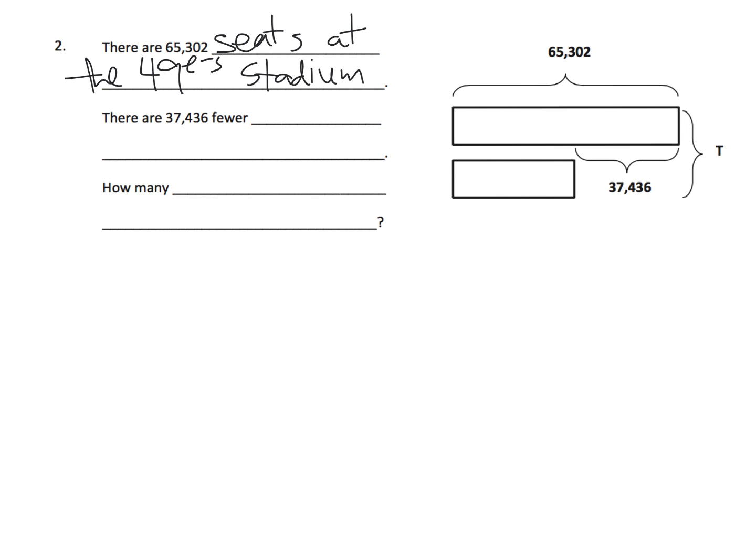seats at the 49ers stadium. And then it says there are 37,436 fewer what? I'm going to say seats at the Giants stadium. So apparently the Giants stadium is shorter. So now what have I done? I'm going to call this the 49ers. I'm going to call this the Giants.